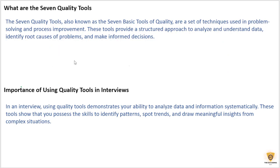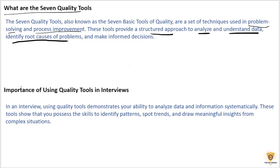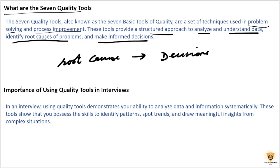So what are the seven quality tools? The seven quality tools, also known as the seven basic tools of quality, are a set of techniques used in problem solving and process improvement. These tools provide us with a structured approach to analyze, understand and identify the root cause of a problem, and then make informed decisions.